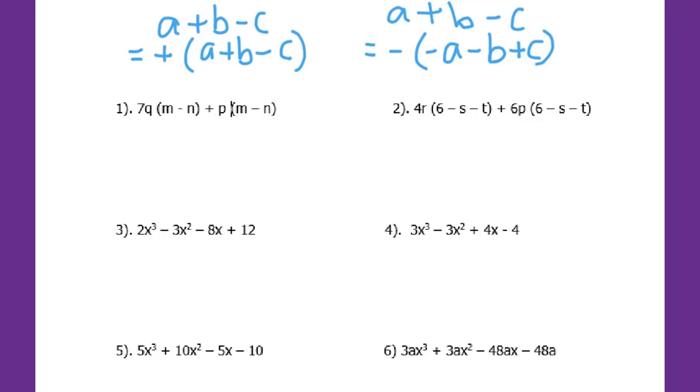Let's go to number one. When you look at the problem, you can find m minus n and then m minus n. So m minus n will be the common factor. I take m minus n outside. When I say take outside, that means you divide. Divide by m minus n, I will get 7q left. Plus, m minus n is gone, so plus p. That's how to do the first question.